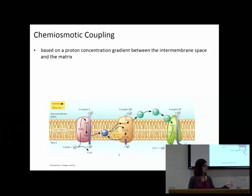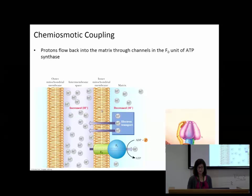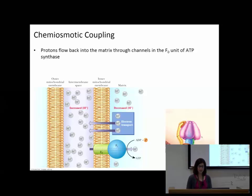The matrix is losing protons, so the pH there becomes more basic - higher pH. The intermembrane space is gaining protons, so lower pH. Electron transport pumps protons from the matrix into the intermembrane space. There is a chemiosmotic pressure - an electrochemical force driving protons to go back. Just like water behind a dam, we've poked a hole through the inner mitochondrial membrane, and that hole is the ATP synthase. If things are going well, the only way protons can go back is through the ATP synthase.